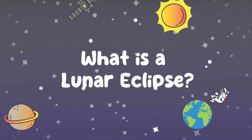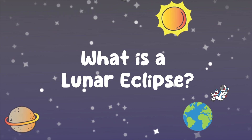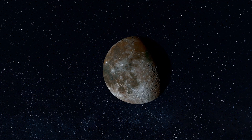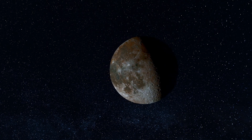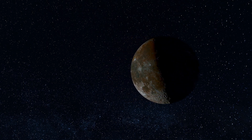A lunar eclipse is when the moon's orbit takes it behind the earth so that the earth's shadow is cast out into space and the moon travels into the earth's shadow. It gets darkened for a short period of time, or eclipsed.